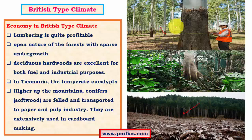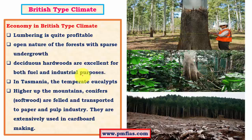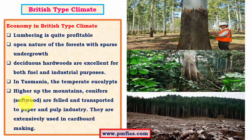In the British type of climate, we have relatively pure stands of deciduous trees that are well spaced, providing good transportation facilities and lacking dense undergrowth — all of which aid the lumbering industry. In the Tasmanian region we have temperate eucalyptus, which is a characteristic feature of Australian climate. Higher up the mountains, deciduous trees are replaced by conifers. Deciduous trees are usually hardwood, whereas conifers are softwood trees used for making cardboards, matchboxes, and other products that mainly depend on softwood for their manufacturing.